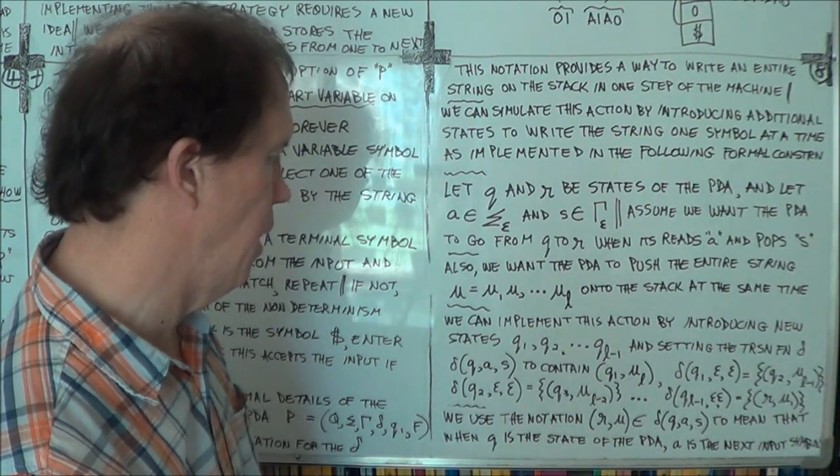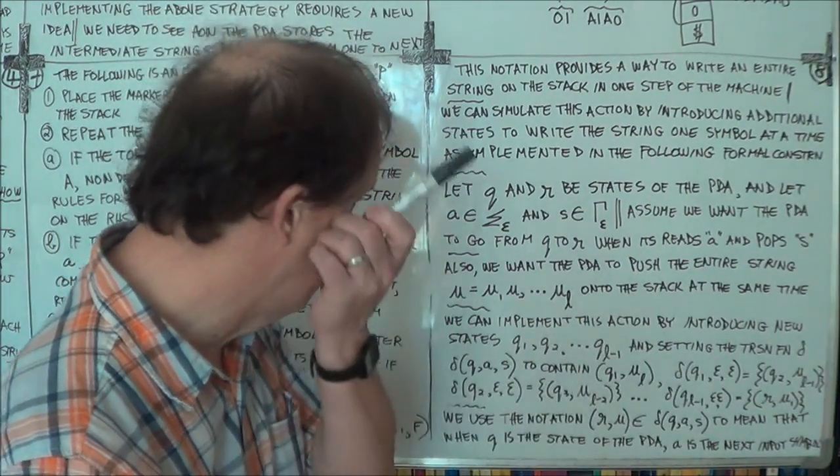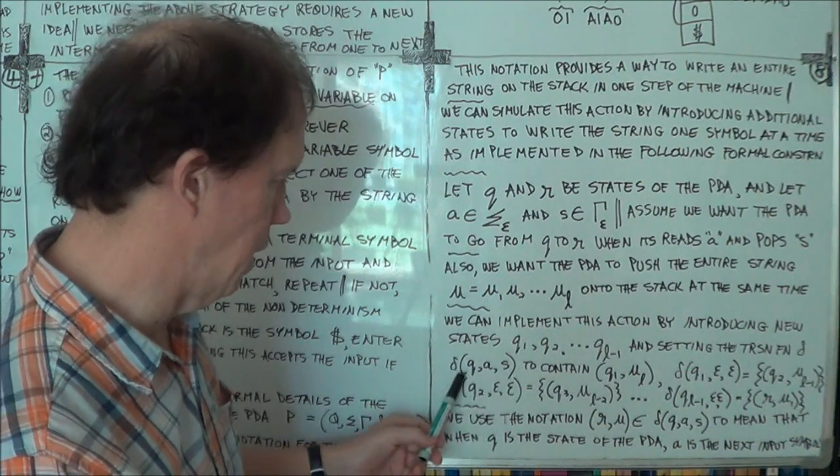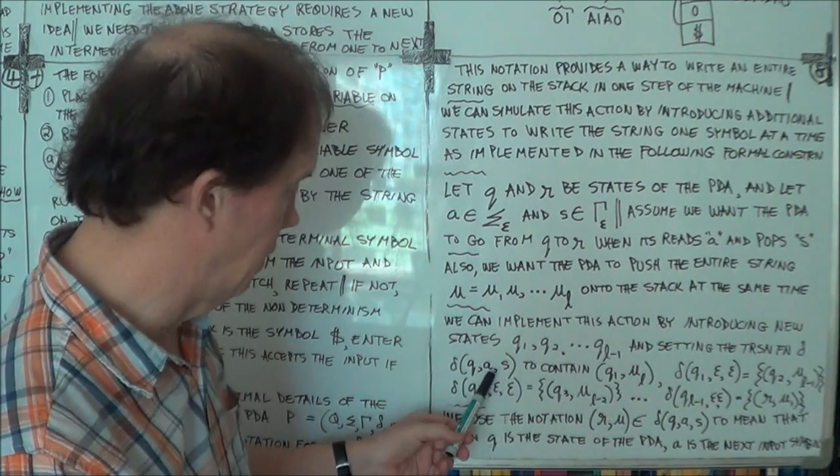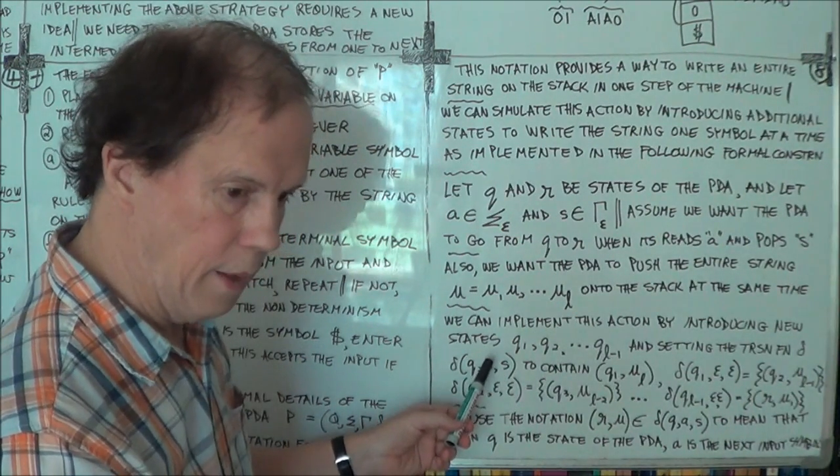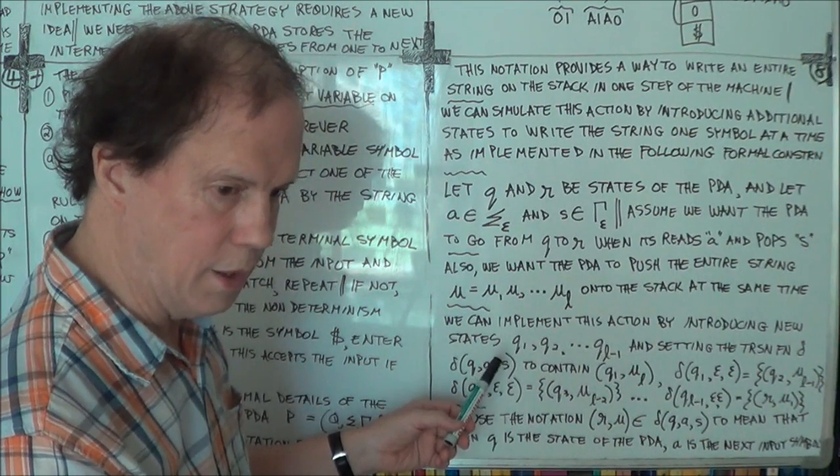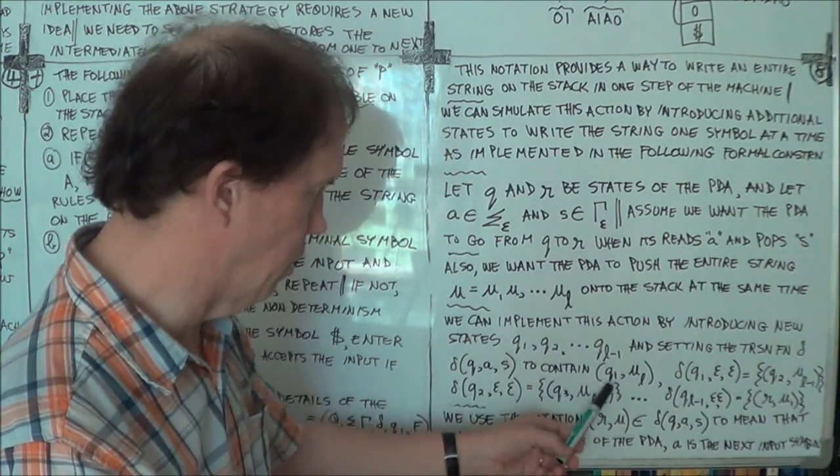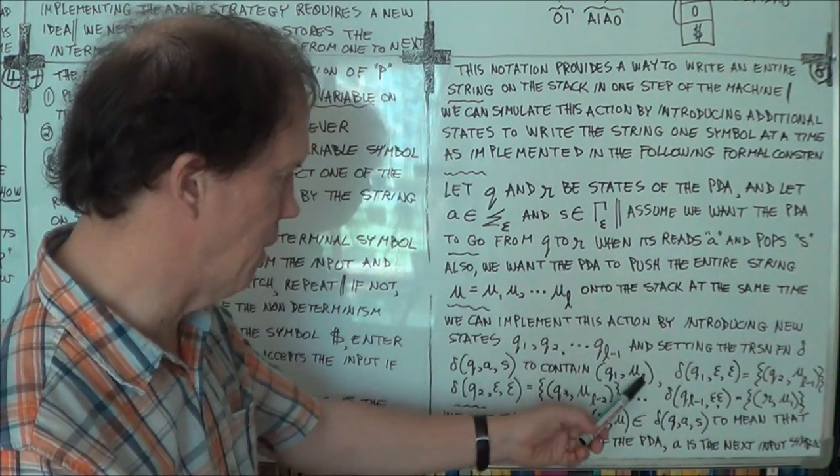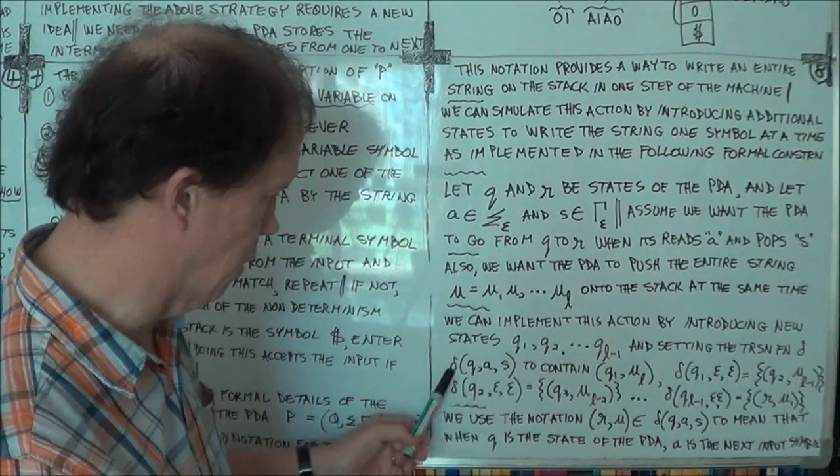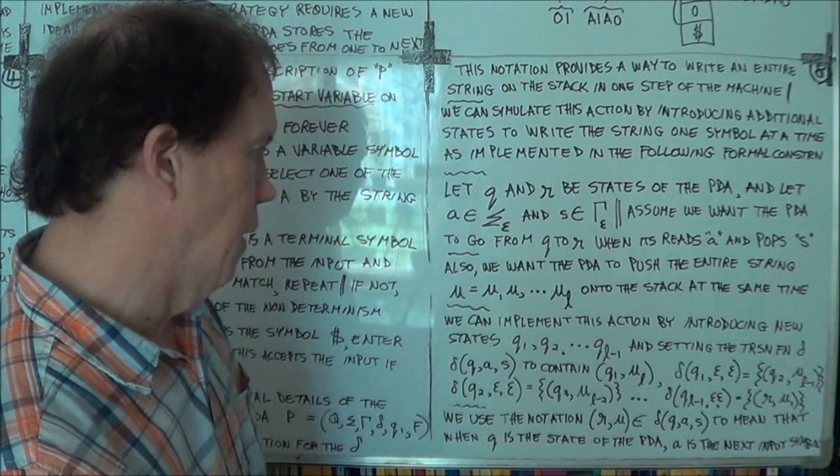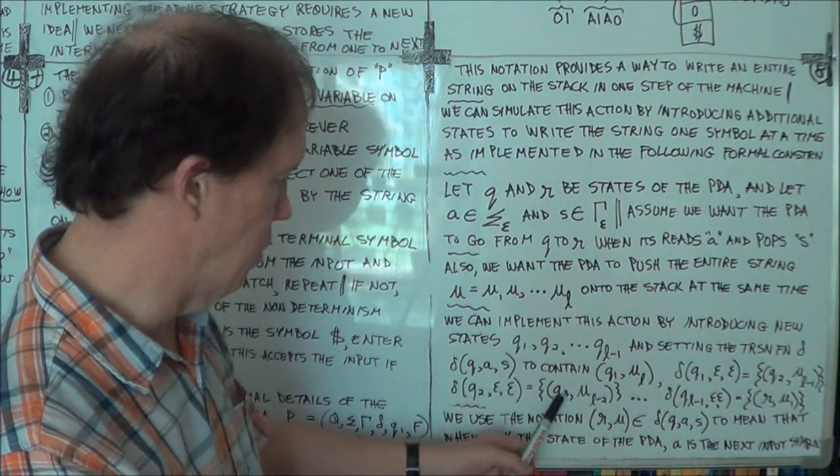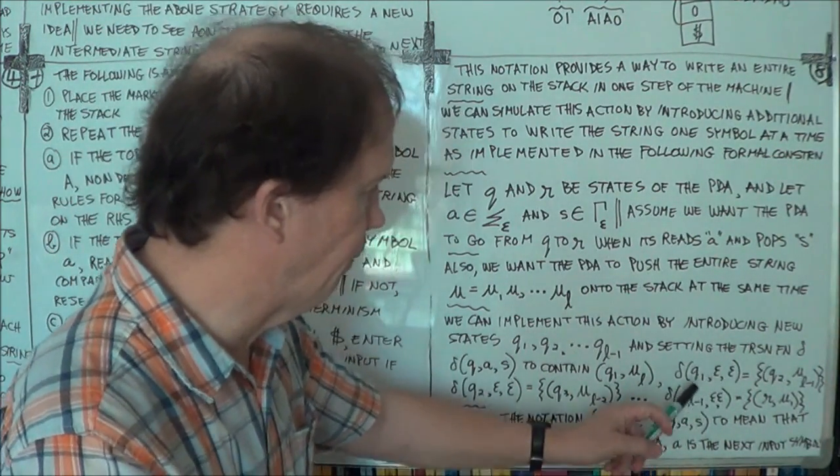Now you add more transition rules. Now remember this delivers a set. It's a non-deterministic machine, so it delivers a set of these ordered pairs. So let that be one of the members of the set that this creates. And then add a whole bunch of other transition rules of this form.